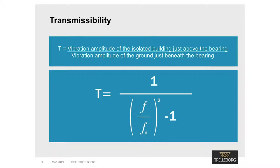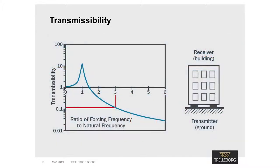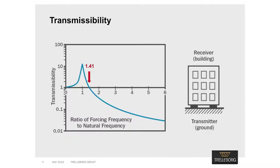Due to the damping inherent within all elastomeric materials, the expression for transmissibility is modified to take account of damping, though we will not go into detail about that today. This figure shows the vertical axis as the transmissibility on a logarithmic scale. The horizontal axis is the ratio of the forcing frequency from the ground vibration divided by the bearing's natural frequency, referred to as the frequency ratio.